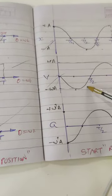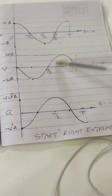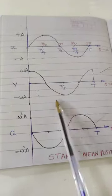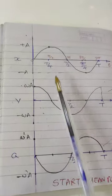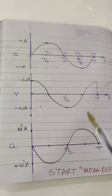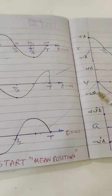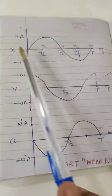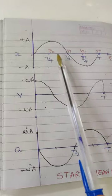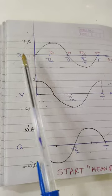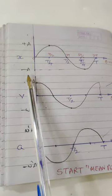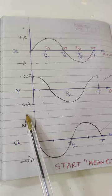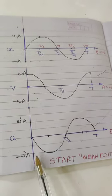This is the nature of graph when the particle starts from right extreme — standard cosine style. This becomes number one, this becomes number two. For right extreme: time divisions are T, T/2, T/4, 3T/4. Displacement is +a to -a, velocity is ωa to -ωa, and acceleration is ω²a to -ω²a.